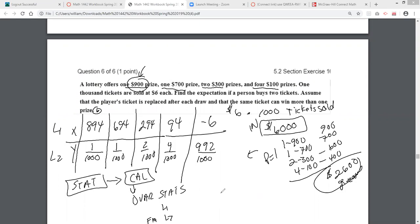And we're looking for the expected value. And the expected value is the mean when you're looking at this. And the mean is negative $3.40.